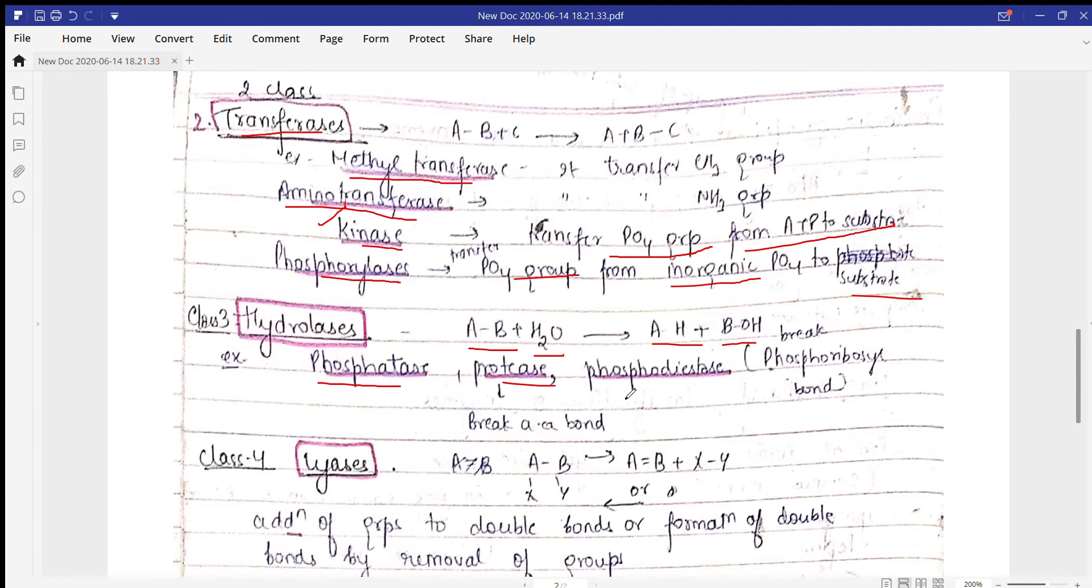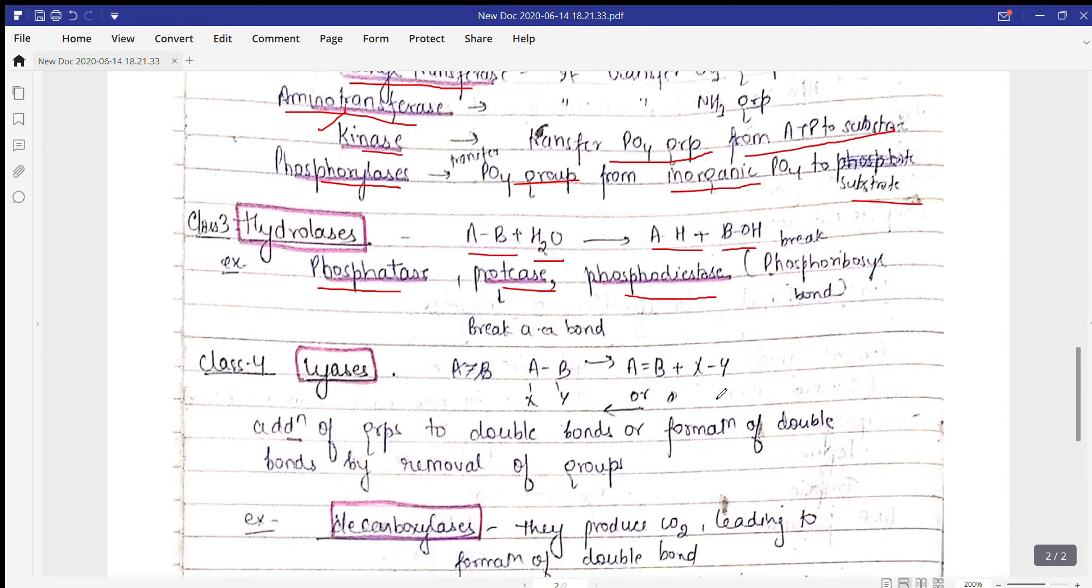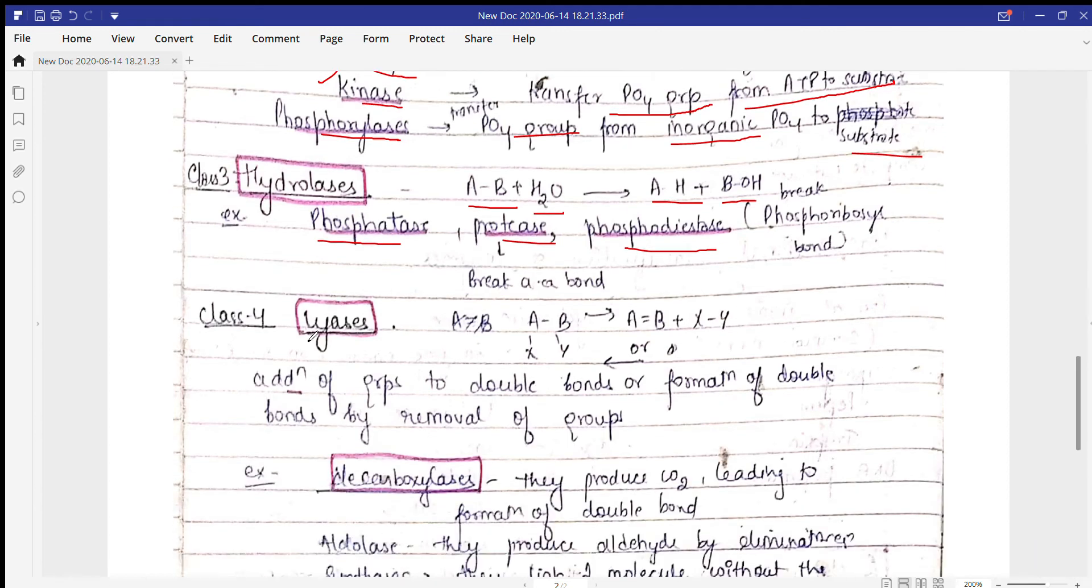Next is lyases. Lyases involve the addition of groups to double bonds or the formation of double bonds by removal of groups. In chemistry, there are reactions with groups X and Y. If we remove these groups, they'll form a double bond to complete their valency and form another product.